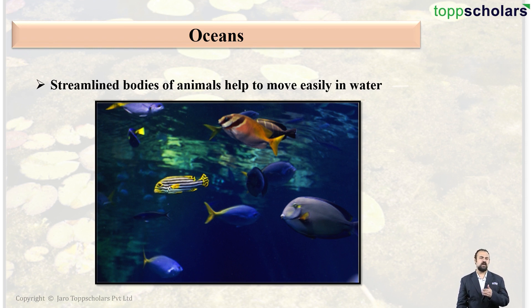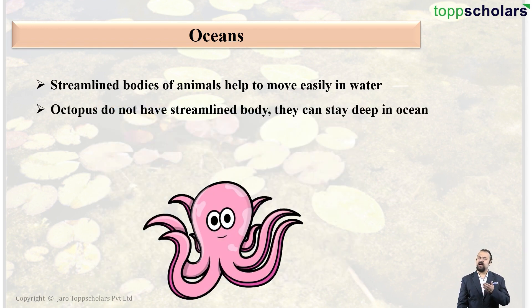Most organisms — for example, the fish which you see here — have streamlined bodies. But there are some organisms that do not have streamlined bodies, for example this octopus.